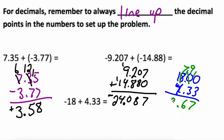Bring down my decimal. 7 minus 4 is 3 and a 1. And then remember take the sign of the larger number. Negative 18 is bigger than 4.33 so my answer is going to be negative 13 and 67 hundredths.